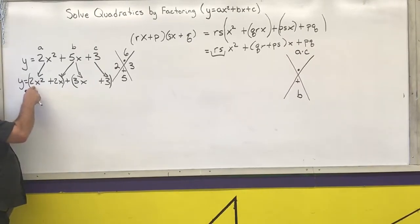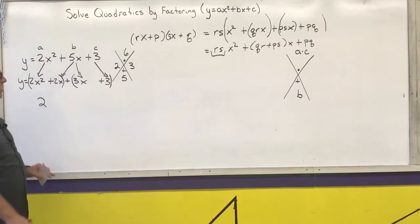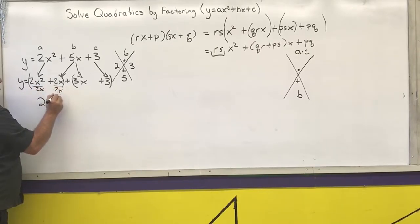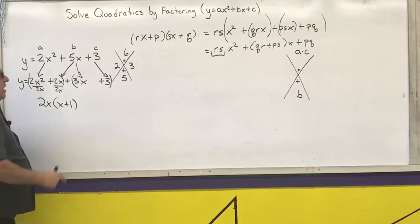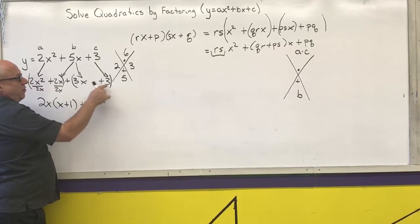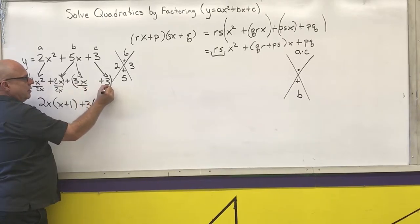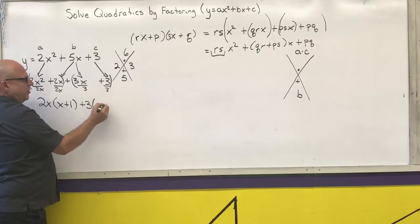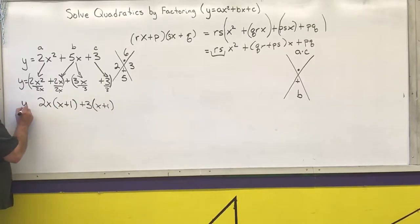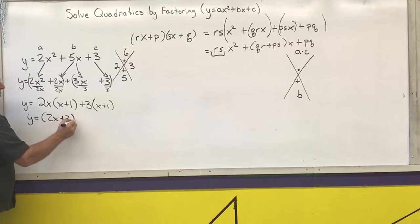Find the greatest common factor of the first group, which would be 2. Then take the lowest power of every variable that appears in every term, which would be x to the first. Divide each term by your common factor: 2x squared divided by 2x is x, and 2x divided by 2x is 1. Find the greatest common factor between the threes, which is 3. There are no variables there, so divide each term: 3x divided by 3 is x, and 3 divided by 3 is 1. If you did this correctly, the things inside the parentheses are the same, which means you can combine what's outside and multiply by what's inside.